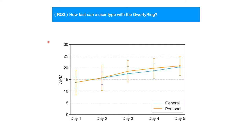For the third research question — how fast can a user type with the QWERTY Ring — we evaluated performance through a 5-day user study. Participants achieved a speed of 13.7 words per minute in the first 40 minutes and reached 20.6 words per minute after 5 days of training. The results show that QWERTY Ring enables efficient touch-based text entry on physical surfaces.